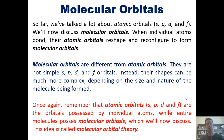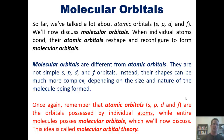Once again, please remember that atomic orbitals — S, P, Ds, and Fs — are the orbitals possessed by individual atoms, while entire molecules possess things called molecular orbitals, which we'll now discuss.